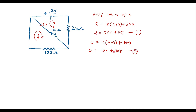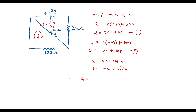We can simplify these two expressions directly using a calculator. Keep the calculator in equation mode and choose two unknown variables, then directly feed the values and we will get X and Y. We get X equals 0.05866 amp and Y equals minus 5.33 times 10 to the power minus 3 amp. Therefore I1 is the current flowing through the 10 ohm resistor, and since X and Y are in the same direction, I1 equals X plus Y, giving I1 equals 0.0533 amp.